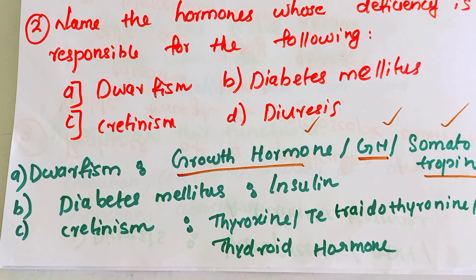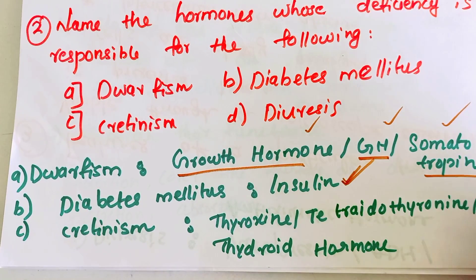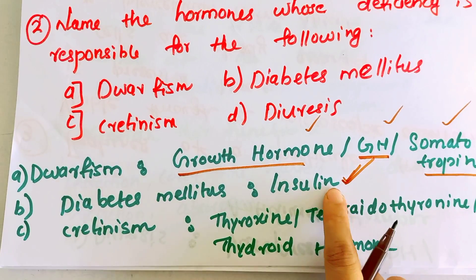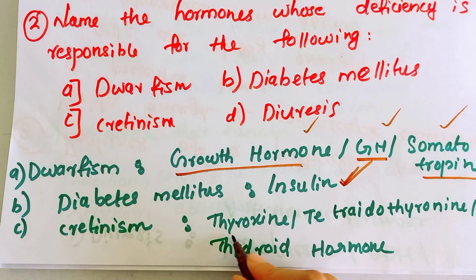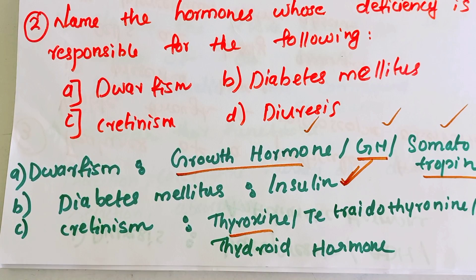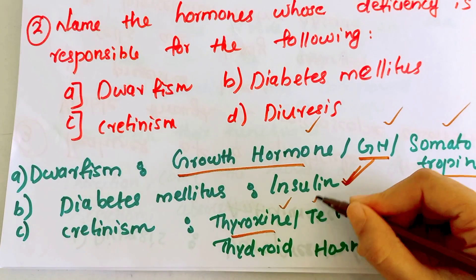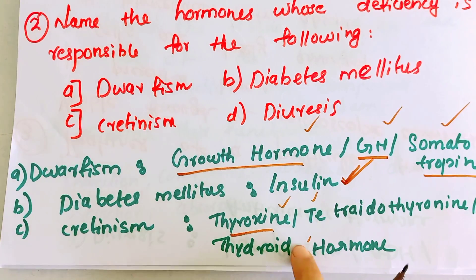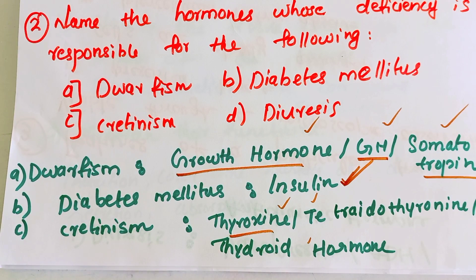Diabetes mellitus is caused by a deficiency of Insulin. Cretinism is caused by a deficiency of Thyroxin, also known as Tetraiodothyronine or Thyroid hormones. These are the three hormone deficiencies responsible for the respective conditions.